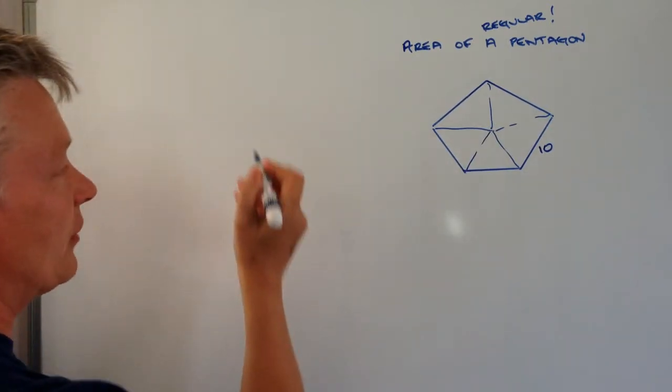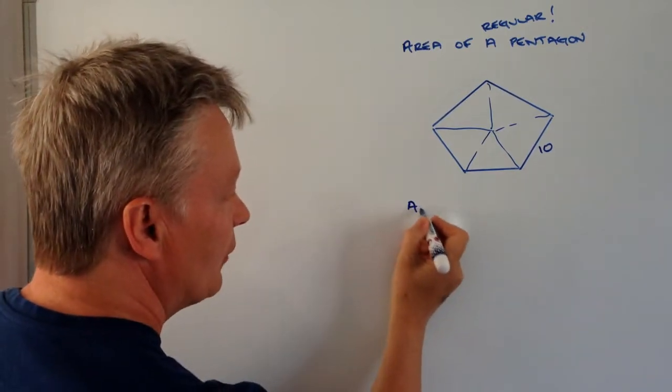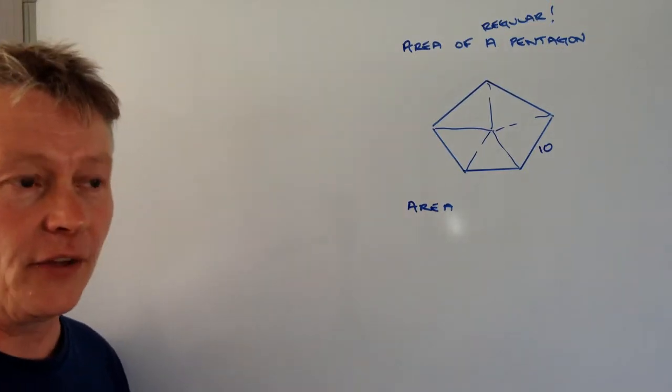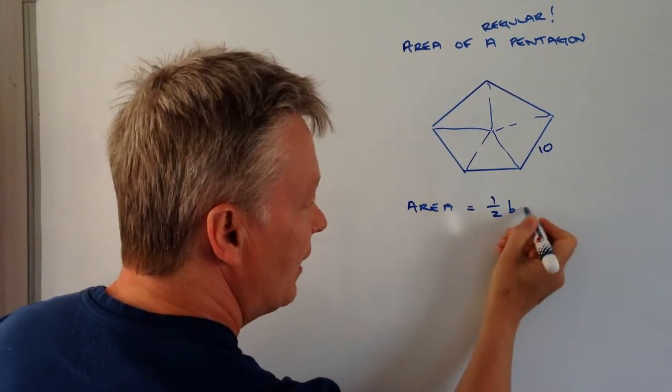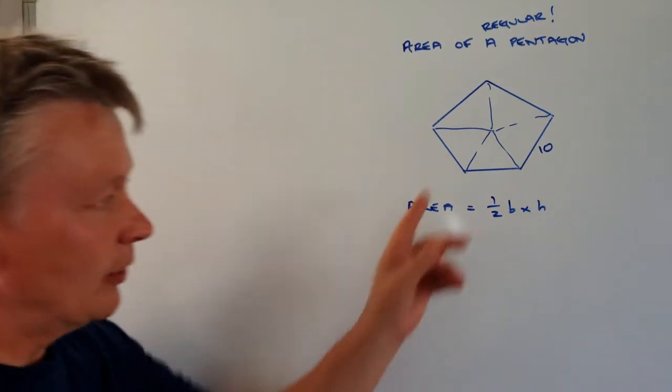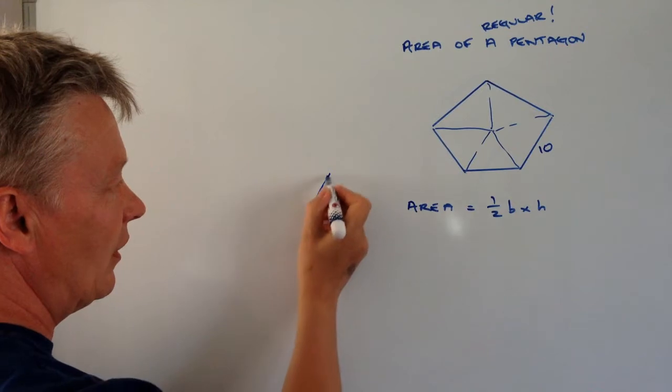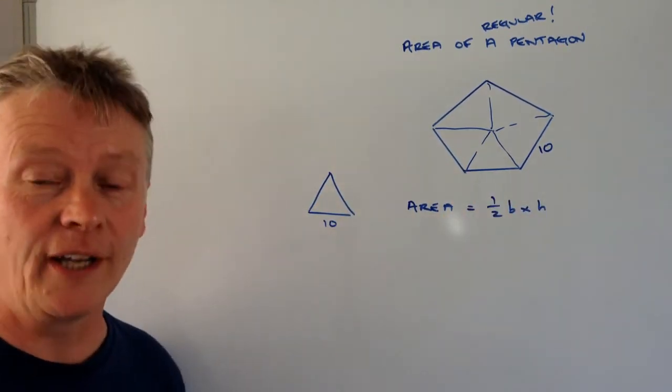Okay, so the first thing we need to know is how do we work out the area of a triangle. Well, area of a triangle, there's a couple of formulas you can use, but the most popular one at the moment for this is going to be a half base times height. So if we look at this individual triangle and we take this out, what we've got is something with a base of 10, which is this one here, perfectly fine.